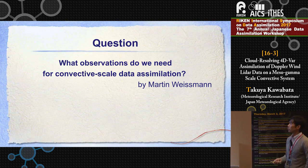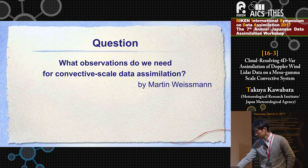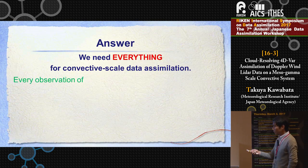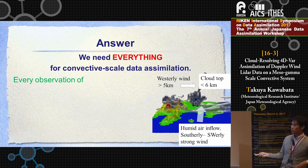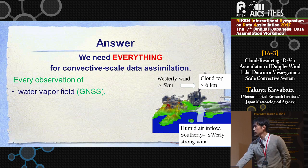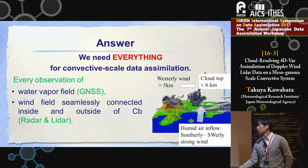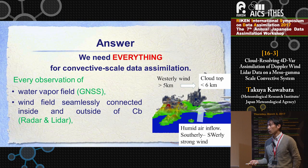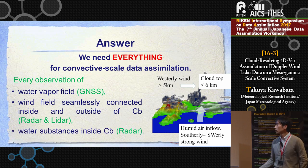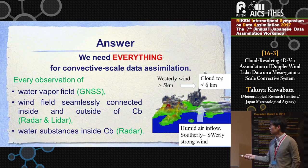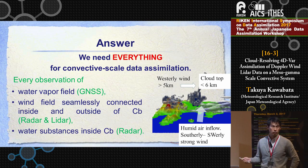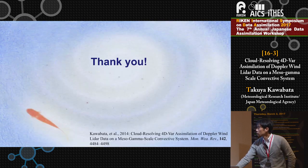So we can answer the question: what observations do we need for convective-scale data assimilation? We need everything. We need humid airflow and water vapor fields from GNSS, and strong wind in the troposphere. We need the wind field seamlessly connected inside and outside the cumulonimbus derived by weather radar and LIDAR. And we also need water substances inside the cumulonimbus. After all our assimilation, we get a successful one-hour rainfall forecast. Thank you for your attention.